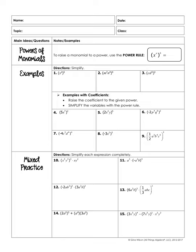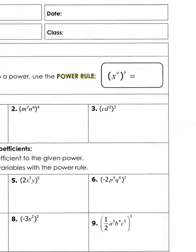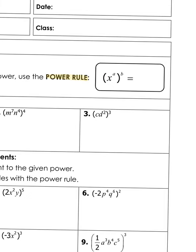The first thing we're going to talk about is what's called the power rule. The power rule is when you have a variable raised to some power. In this example, we have x to the a power and we are raising that to the power of b. When you have a power raised to another power, you actually multiply those powers together, giving x to the a times b power.